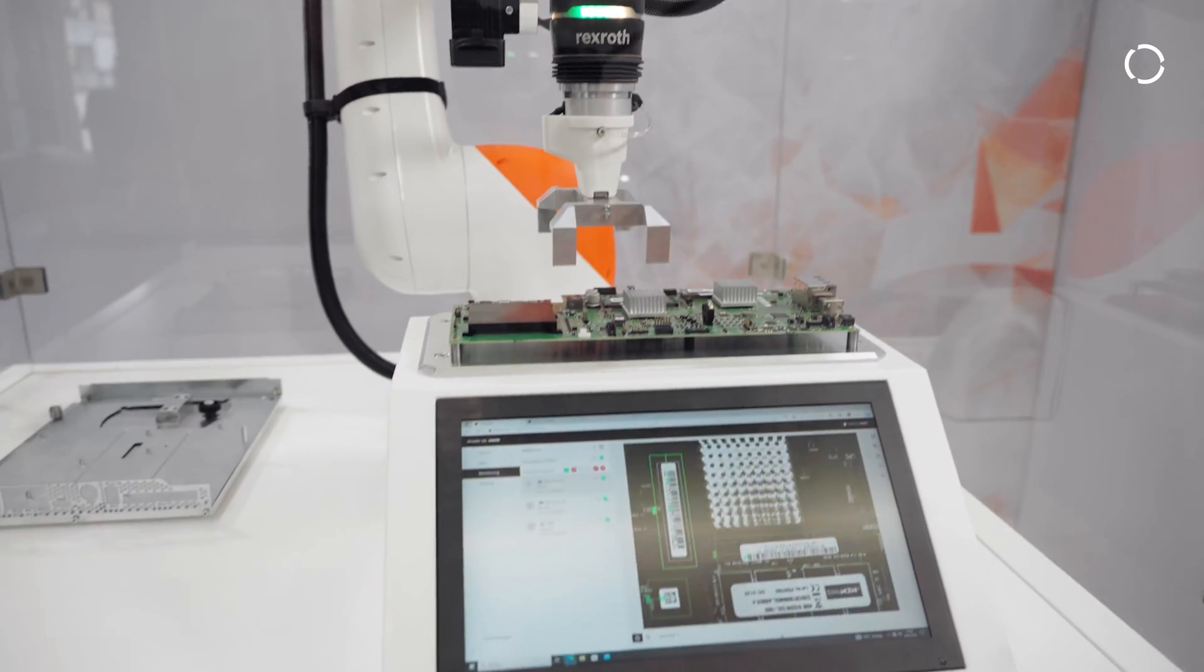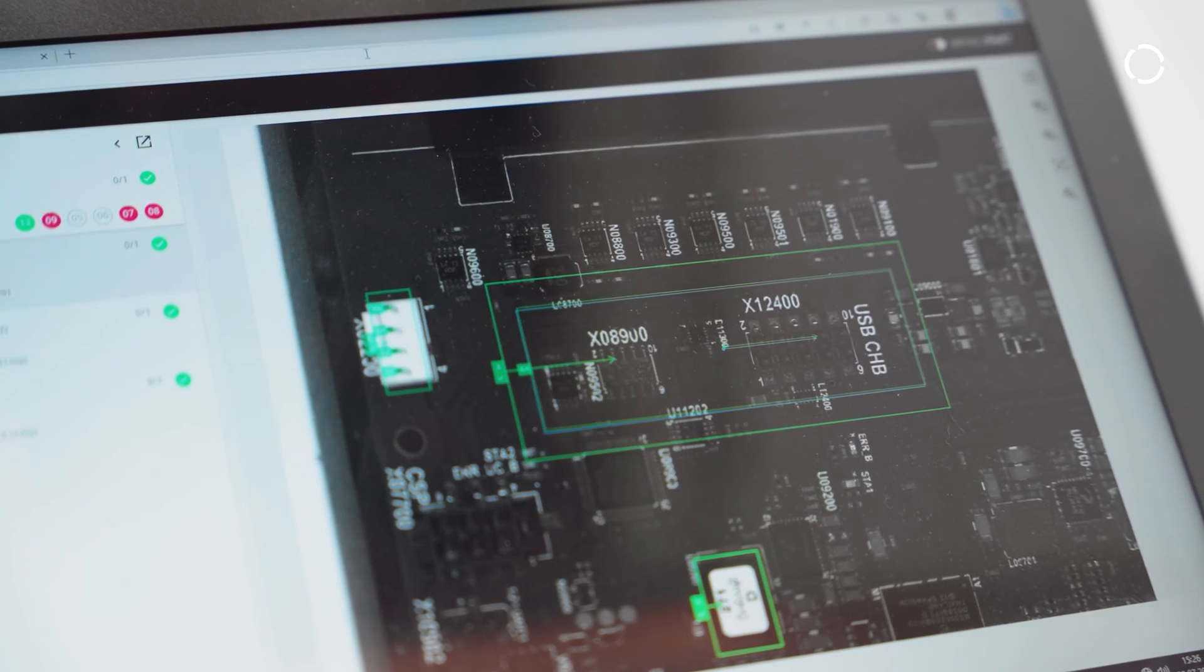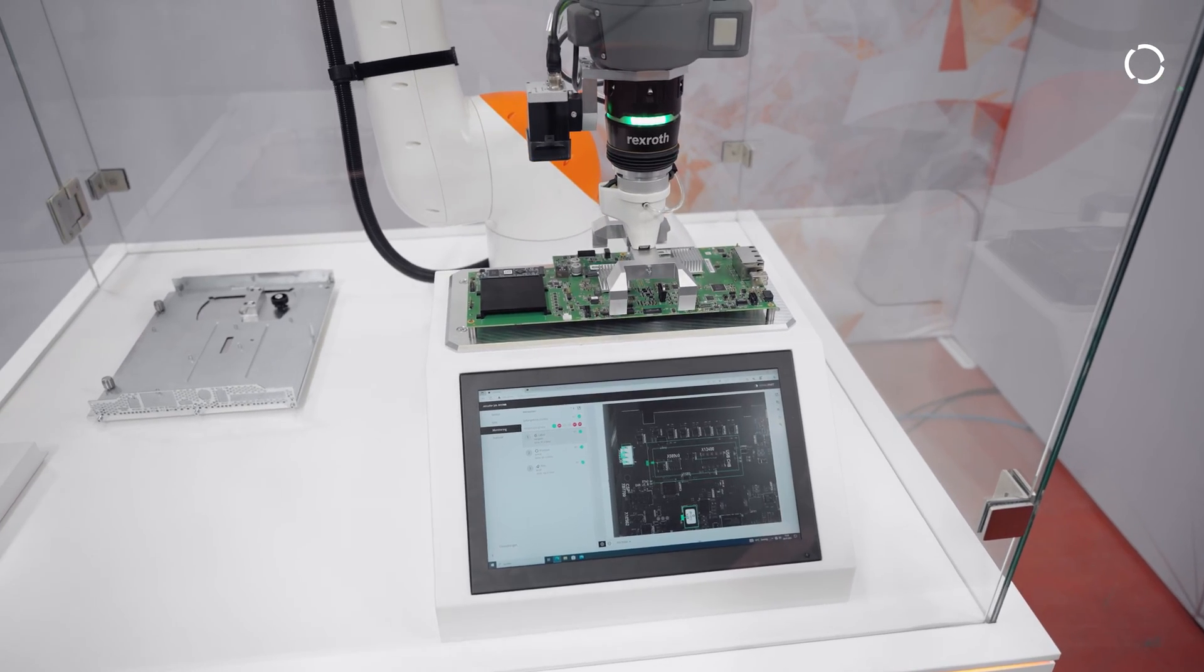The compact and lightweight 2D camera from SensorPart detects and checks whether components are present and correctly mounted and identifies barcodes and data matrix codes on the PCB.